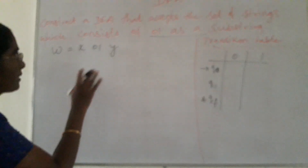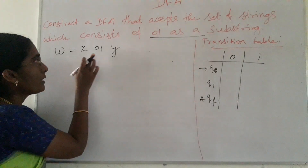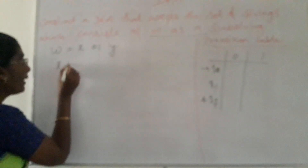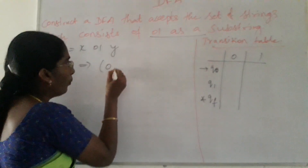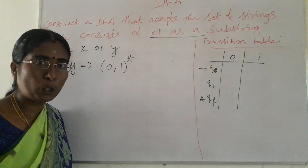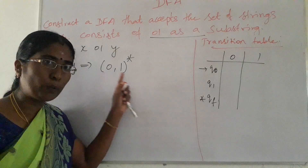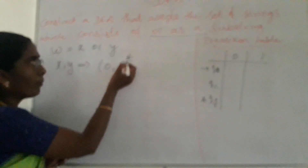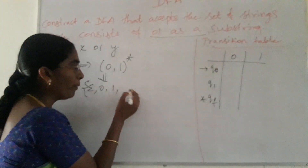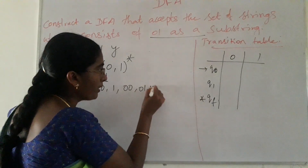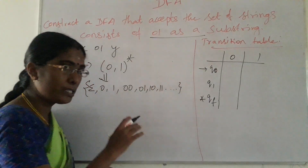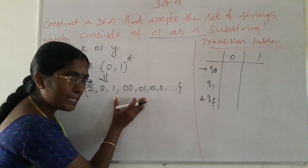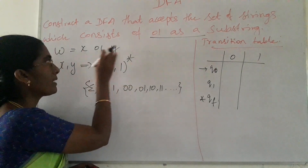The string should be of the form W = X01Y, where X and Y can be replaced by (0,1)*, meaning X and Y belong to the set of all strings over the alphabet {0,1}. That is: epsilon, 0, 1, 00, 01, 10, 11, and strings of length 3, 4, 5, and so on — any number of symbols. This set of strings can be substituted in place of X and Y.